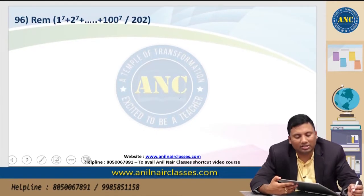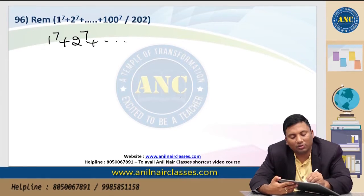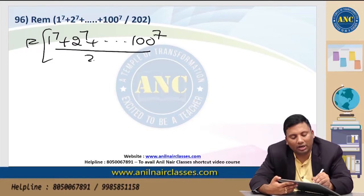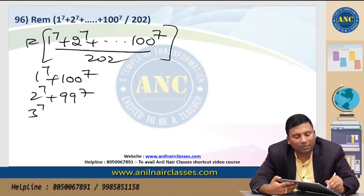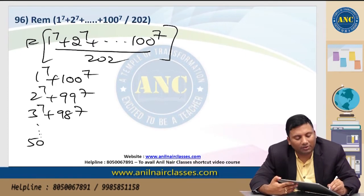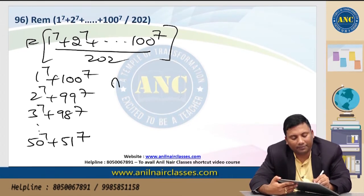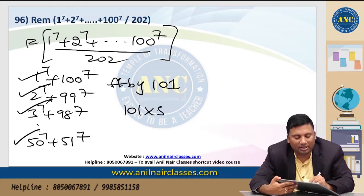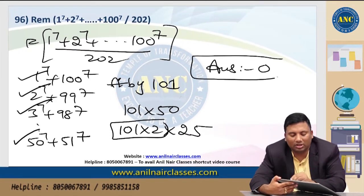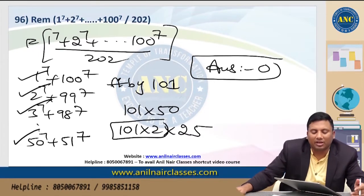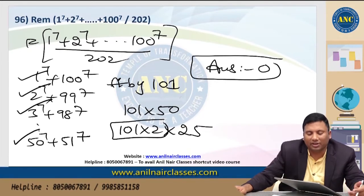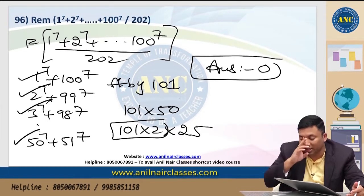1^7 + 2^7 + ... + 100^7 divided by 202. Pair them: (1^7 + 100^7), (2^7 + 99^7), ..., (50^7 + 51^7). Each pair is divisible by 101 since a^n + b^n is divisible by (a + b) when n is odd and each pair sums to 101. There are 50 such pairs. 50 = 2 × 25, so 101 × 50 = 101 × 2 × 25 = 202 × 25, meaning the number is divisible by 202. Answer is 0.